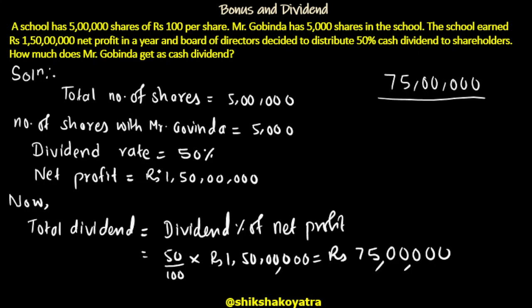Govinda's total dividend: dividend percent is 50%, so 50/100 multiplied by net profit of 35 lakh gives 25 lakh total dividend distributed among the shares.